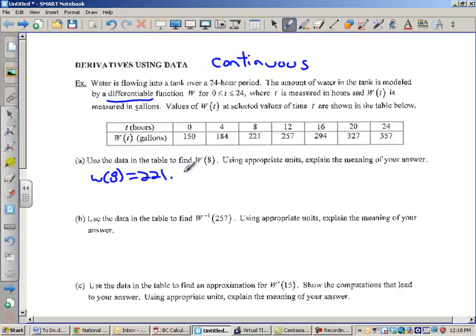So, explain the meaning, full sentence. This means that there are 221 gallons of water in the tank when T equals 8. That is you explaining your answer with appropriate units. Not too bad. You've got to write a sentence.